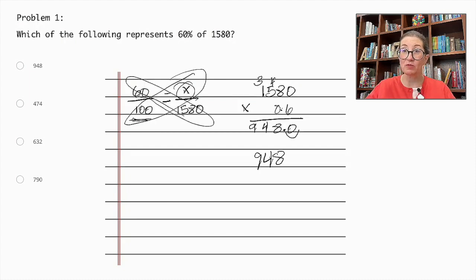Which is the same result we would get if we cross-multiplied. So the correct answer is 948 is 60% of 1580.